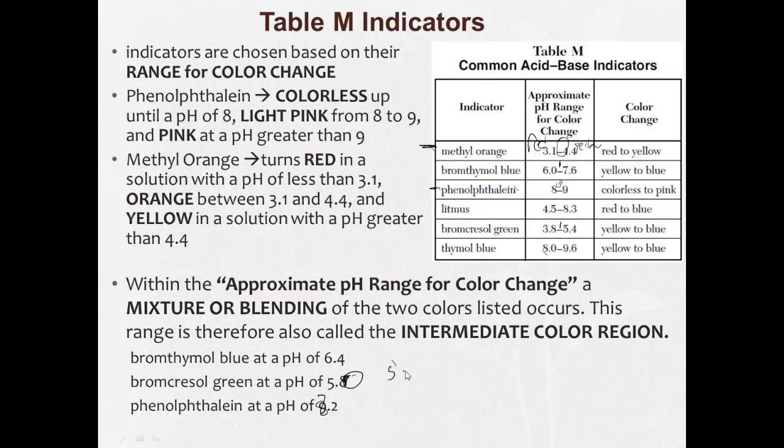Bromcresol green, if it was 5.8, that would be blue, because it's greater than the higher part of the range. Phenolphthalein at 9.2, it's higher than the higher part of the range, so it would be pink at 9.2. Methyl orange at 2.9, it's down low, it would be in the red end of the range.